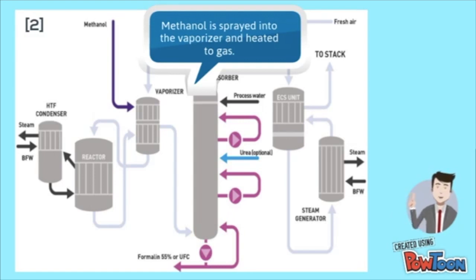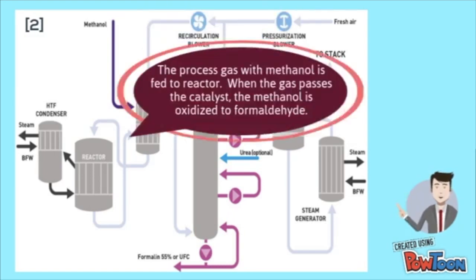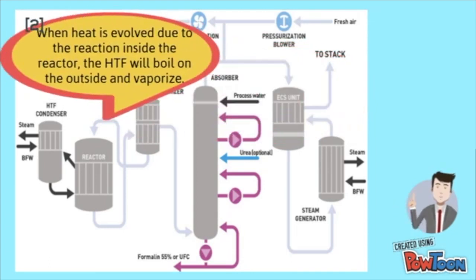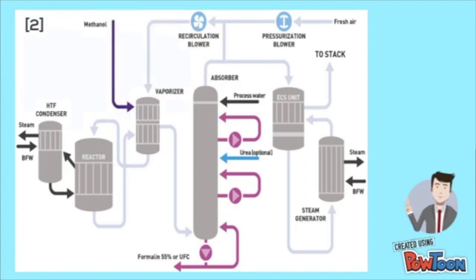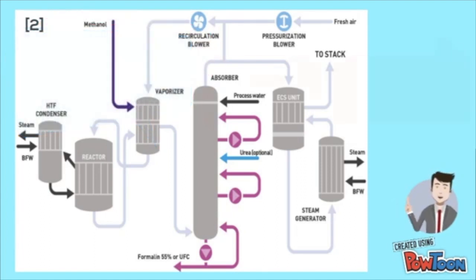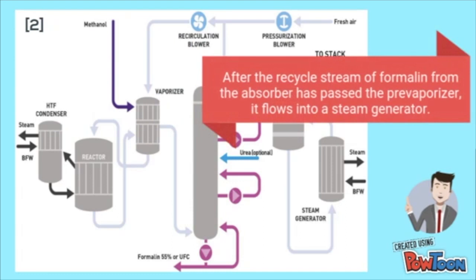Methanol in the vaporizer is heated to gas and fed to the reactor. When the gas is passed through, the catalyst will oxidize the methanol into formaldehyde. From the reactor, HDF will boil and vaporize, and the cooled gases are fed into the absorber.